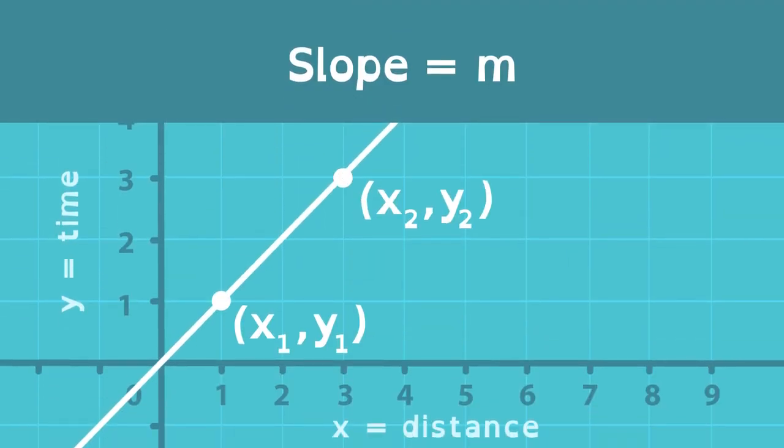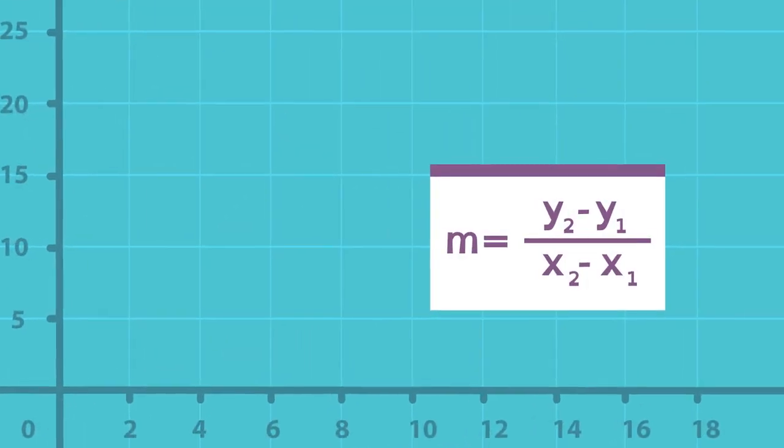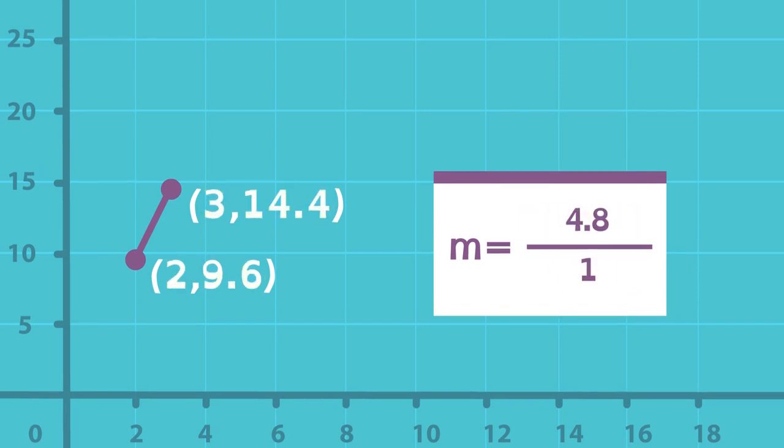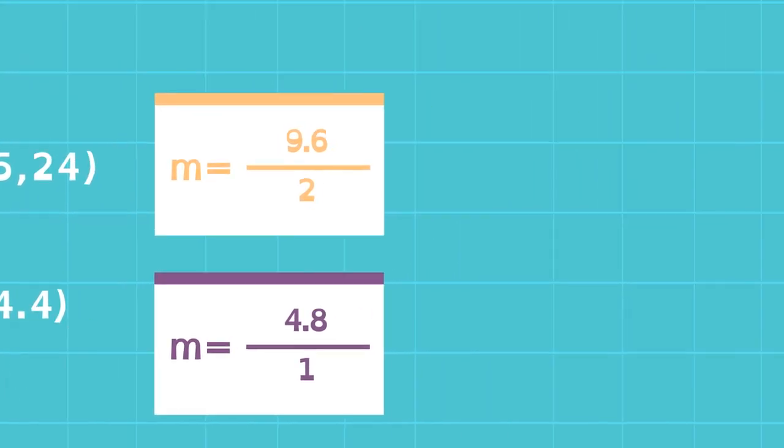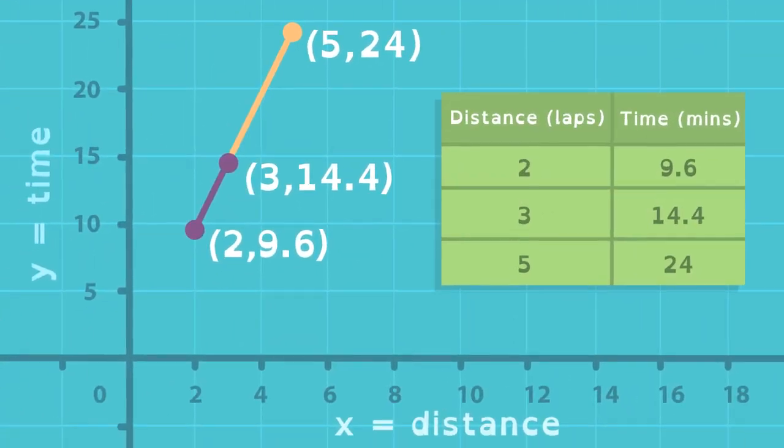Remembering that the slope between two points on a line is change in Y over change in X, Jason calculates the slope between two of his data points and the slope between two other data points. The slopes of the two line segments are equal. This means that the points are actually in a straight line and the robot is moving at a constant speed.